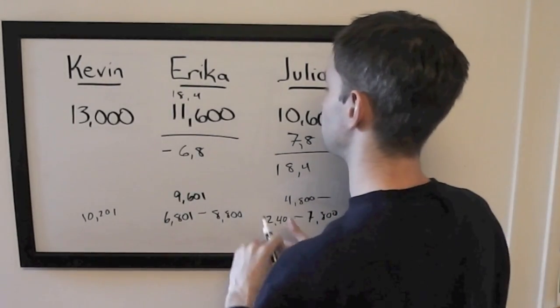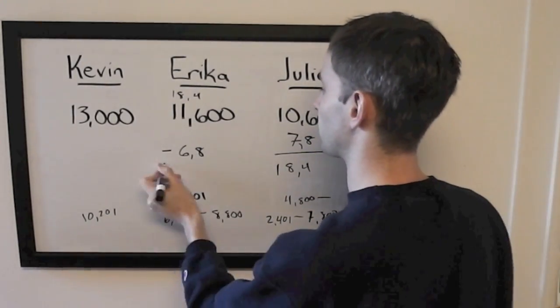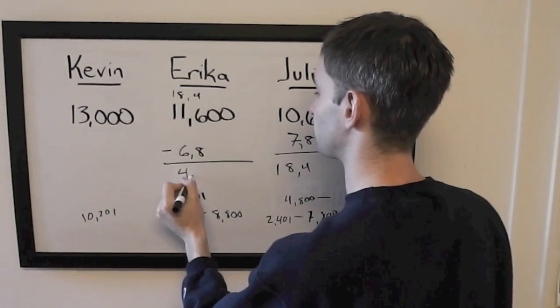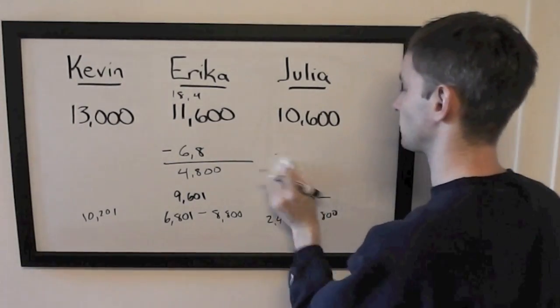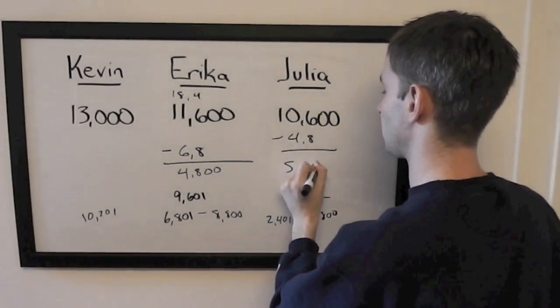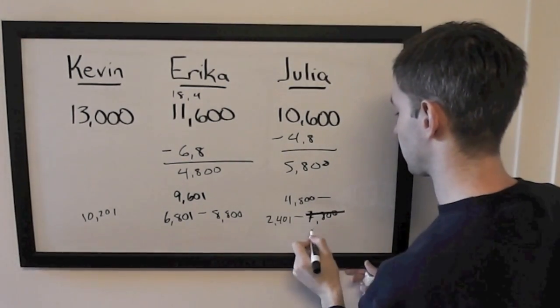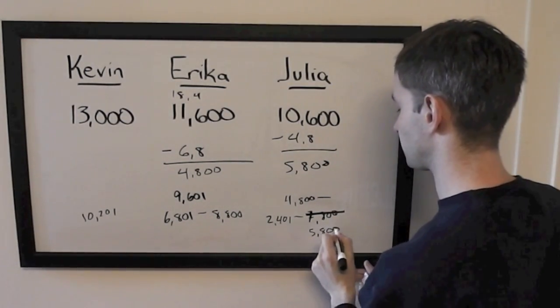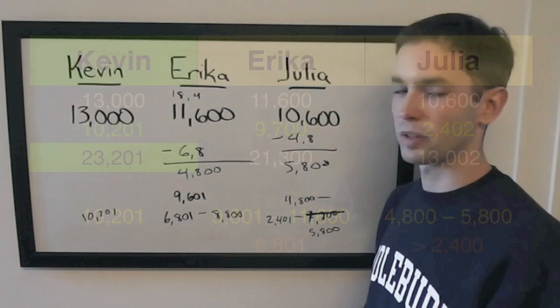And on the other side, to defend against that, Julia will want to restrict her wager to no more than $5,800. So we'll cross that out. And here's her range, here's Erica's range, here's Kevin's range.